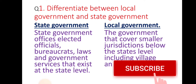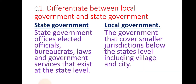Differentiate between the local government and state government. Answer: State government includes state government offices, elected officials, bureaucrats, laws and government services that exist at the state level. Local government is the government that covers small jurisdictions below the state's level, including village and city.